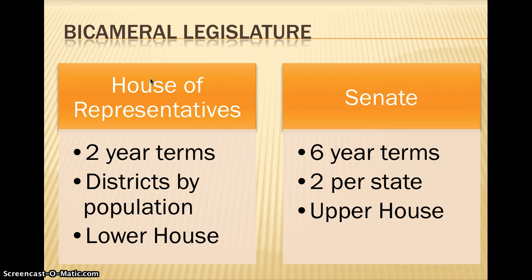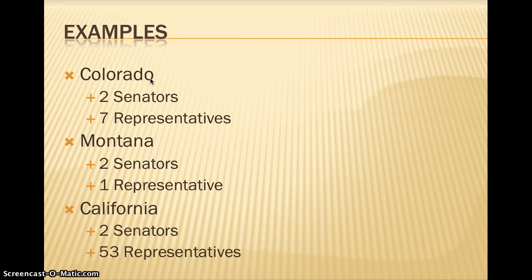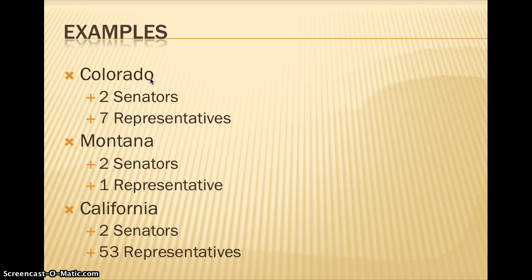Here are some examples of how this works out. In Colorado we have two senators and seven representatives based on our population, and Colorado has grown relative to other states, so in the last couple of decades we've added representation. Montana is a very large state but has relatively few people, so it has two senators but only one representative. On the other hand, California has 53 representatives because it is the largest state, but still just two senators. No matter the size of your state, you'll have two senators, but the number of representatives depends on your population.